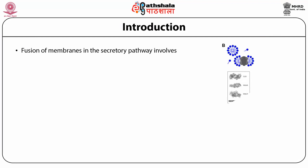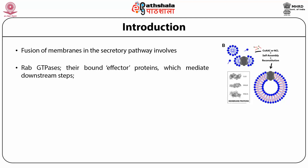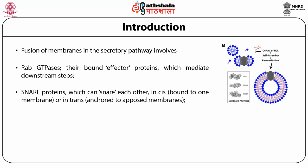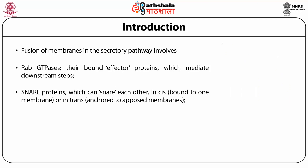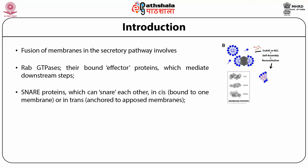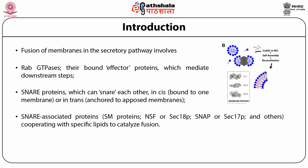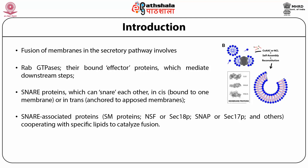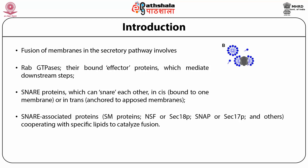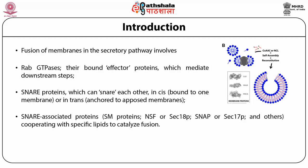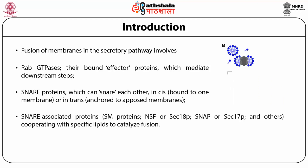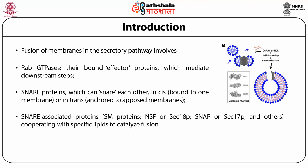Fusion of the membrane in the secretory pathway involves Rab GTPase and their bound effector proteins, which mediate downstream steps. SNARE proteins can form cis complexes when bound to one membrane, or trans complexes when anchored to opposed membranes. SNARE-associated proteins, also known as SM proteins — for example NSF, α-SNAP, and others — cooperate with specific lipids to catalyze membrane fusion. So Rab, SNARE, and SNARE-associated proteins are all involved in the fusion of secretory membranes.